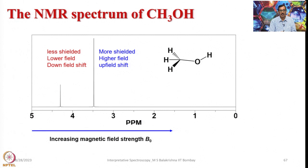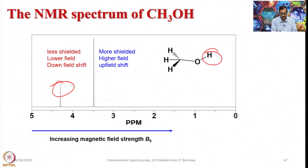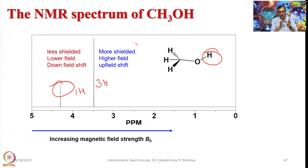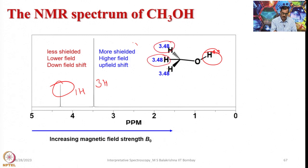Looking at the NMR spectrum of methanol: methanol has 2 types of protons, CH3 protons and an OH proton. The OH proton is less shielded and appears at lower field, while the methyl protons are more shielded and appear at higher field. The intensity corresponds to 3 hydrogens for CH3 and 1 hydrogen for OH. This is the strength of NMR spectroscopy - all three CH3 signals are identical and resonate at the same frequency. The OH signal appears at 4.3 PPM and the CH3 signal at 3.48 PPM.